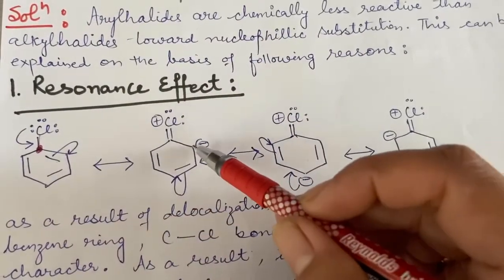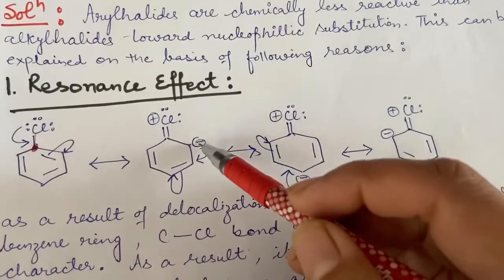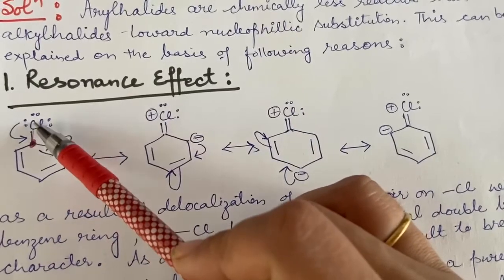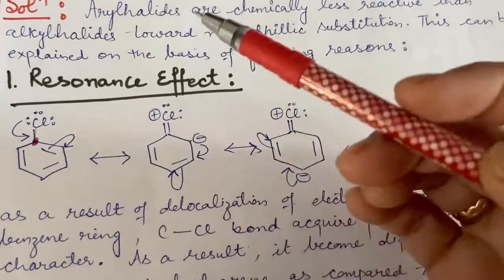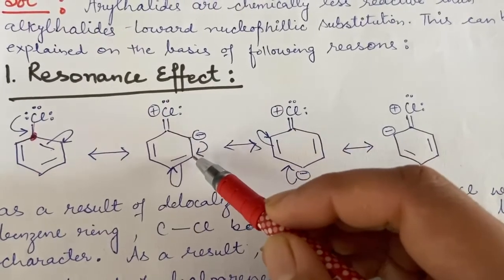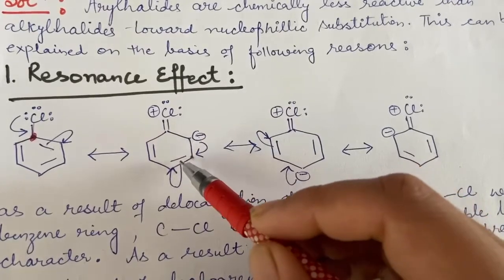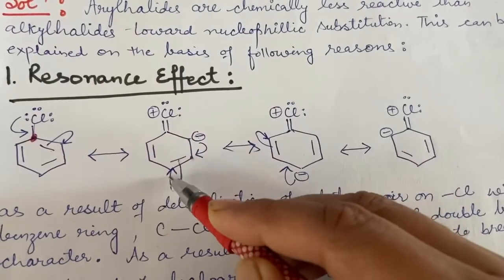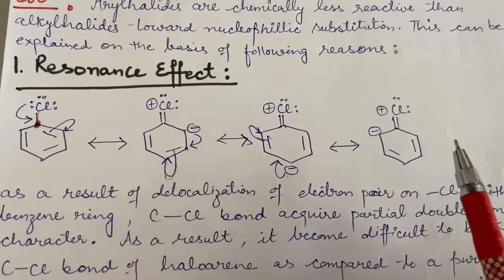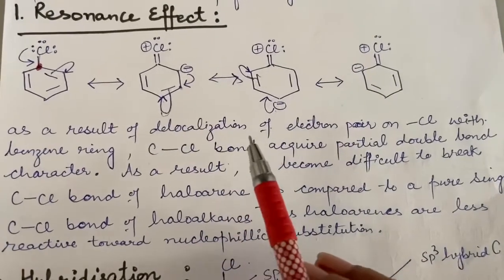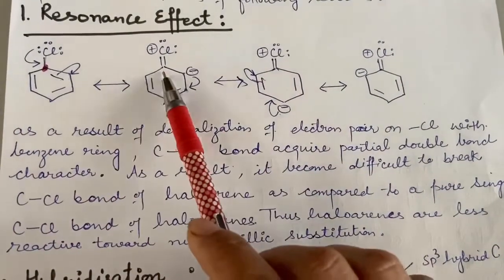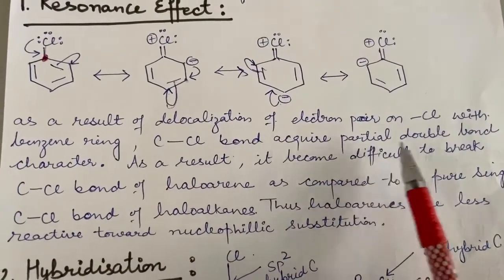The next carbon receives those pi bond electrons and acquires a negative charge. This lone pair is shifting between carbon and chlorine, so you can draw other resonating structures as well. The negative charge shifts further, and similarly each carbon would form 5 bonds which is not possible, so it passes the pi bond electrons to the next carbon, resulting in successive resonating structures of chlorobenzene. As a result of this resonance and delocalization of electrons on the benzene ring, the carbon-chlorine bond acquires a partial double bond character.